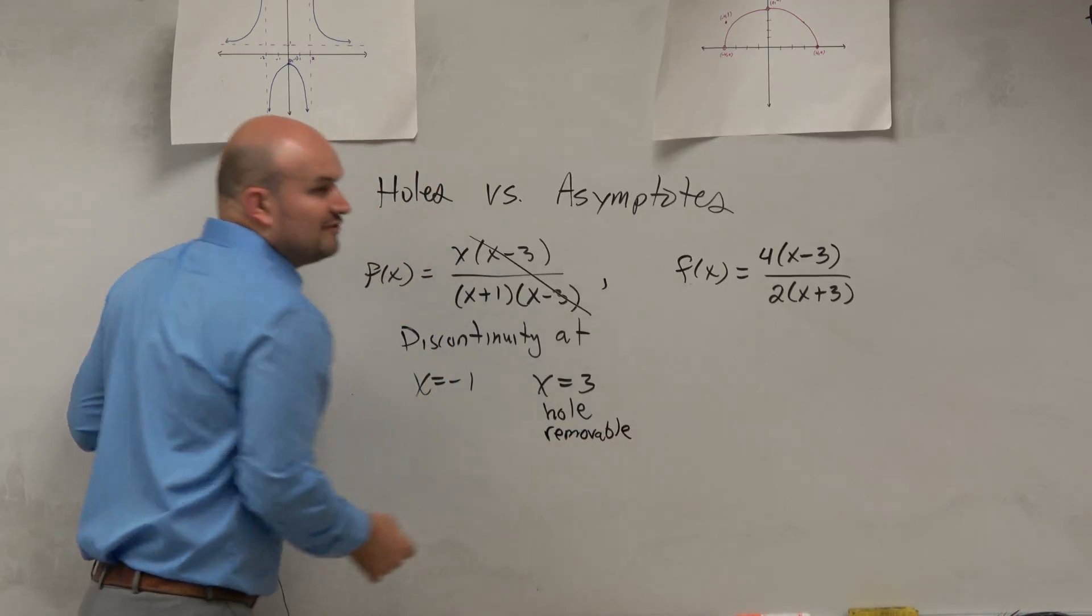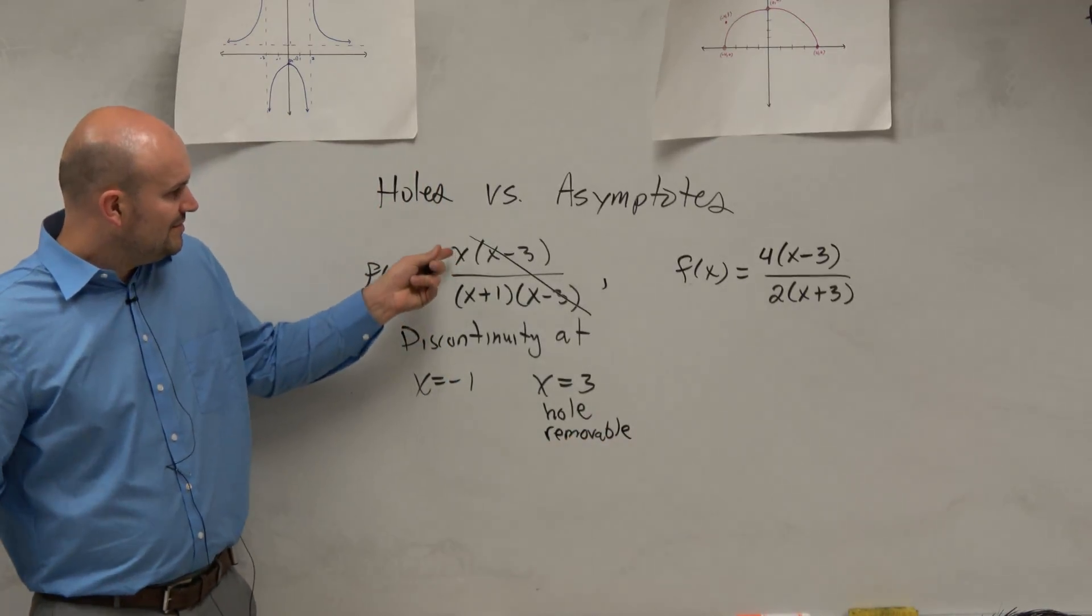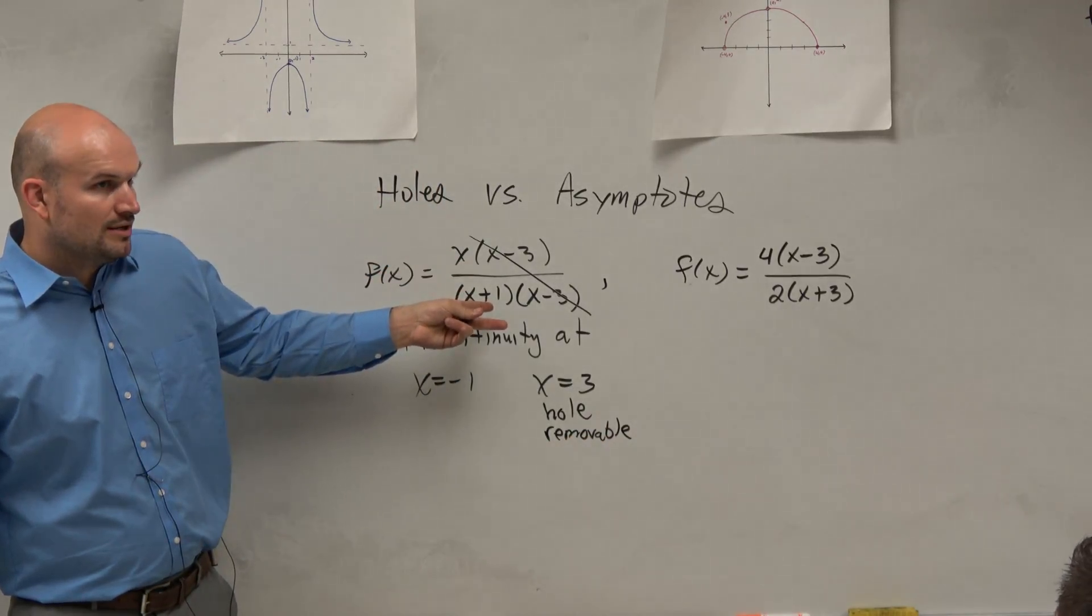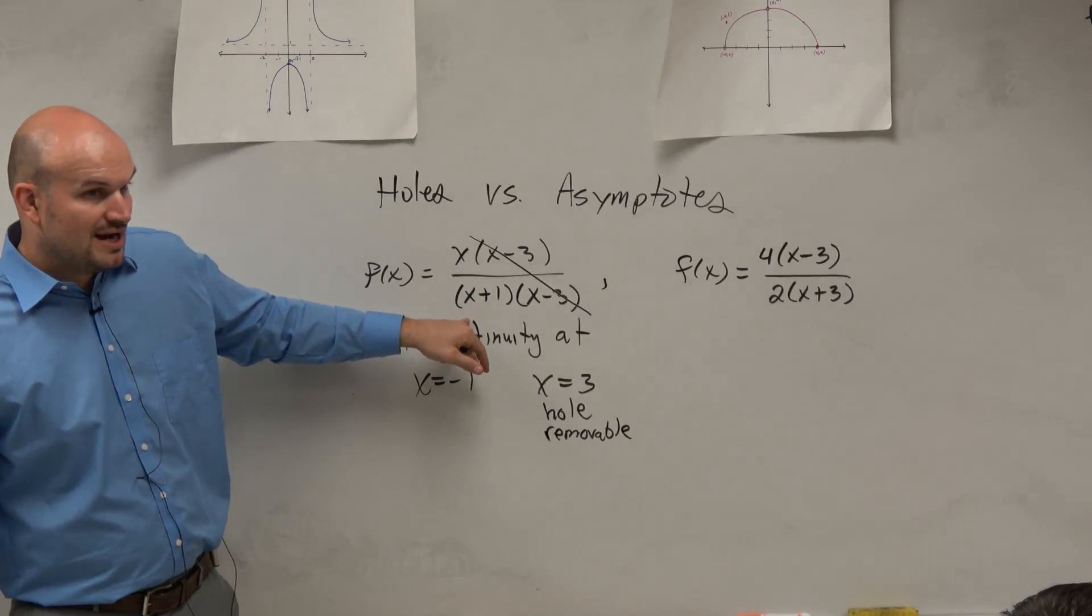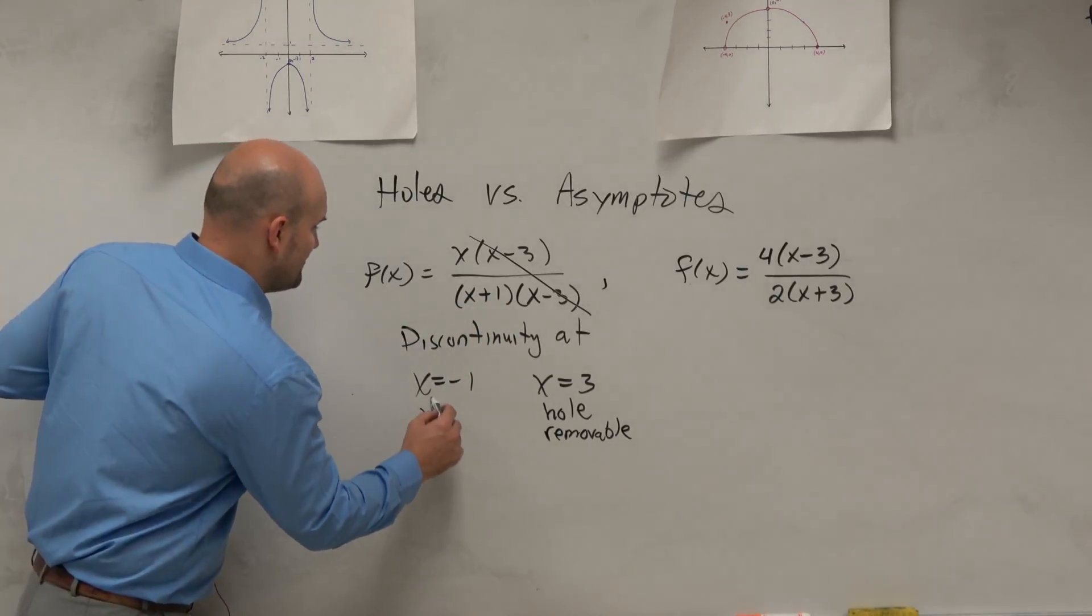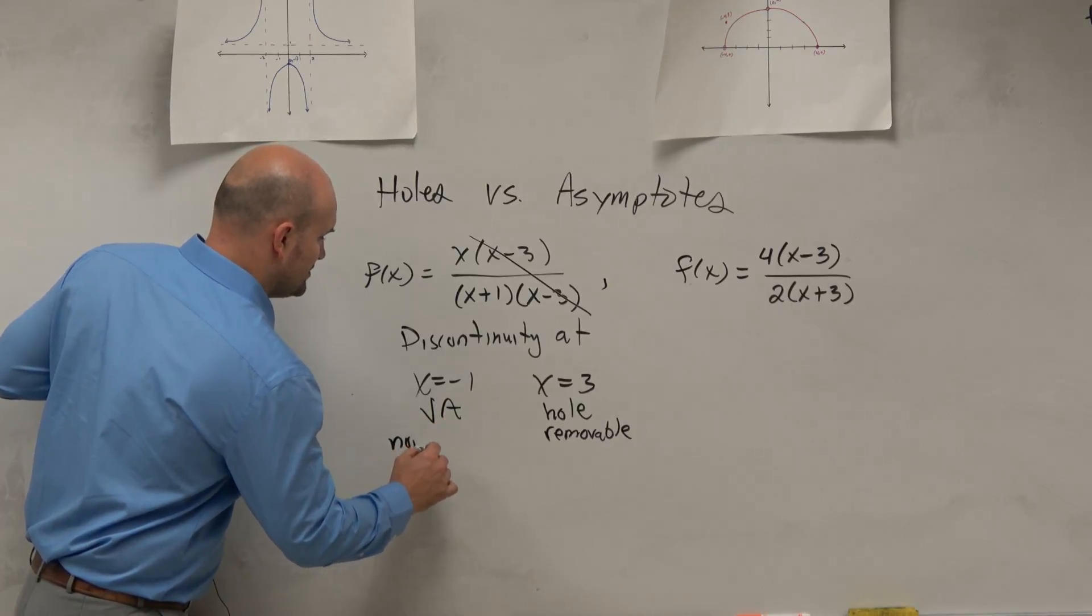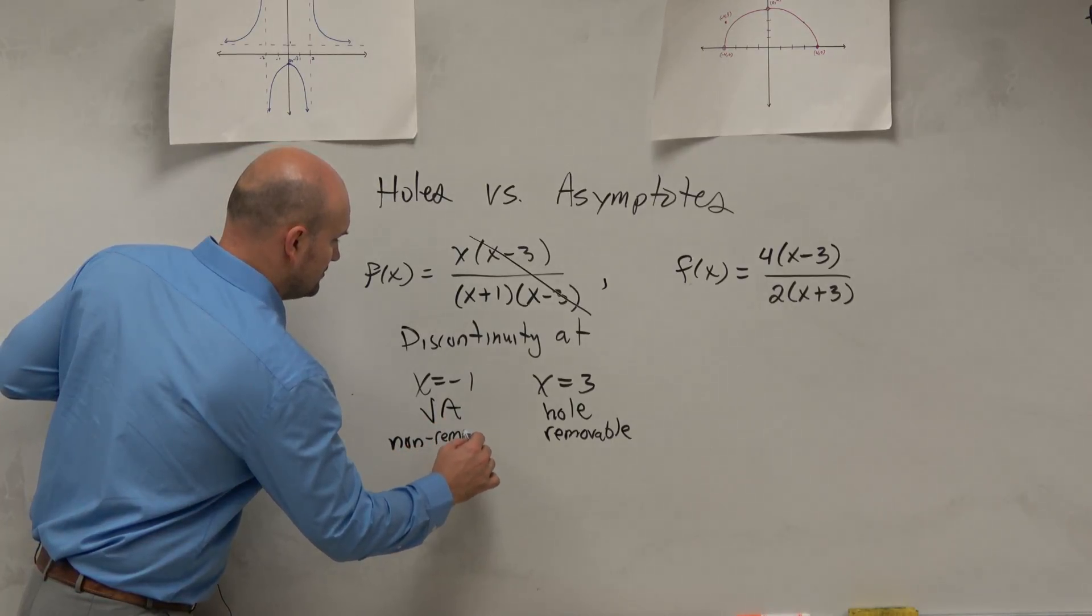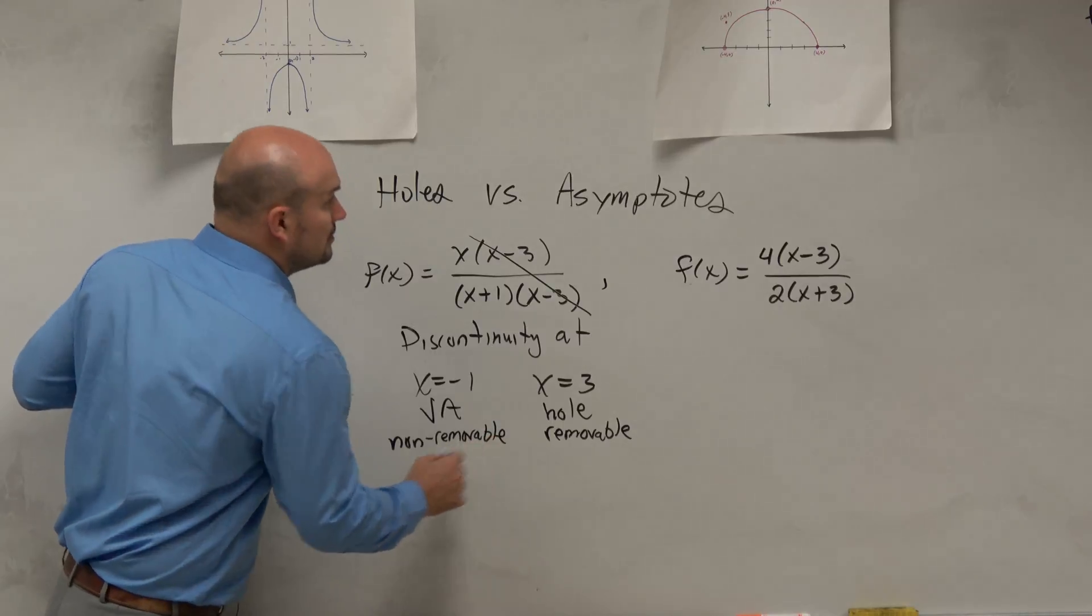On the simplified version of this graph, we still have x over x plus 1. This never got removed. It's non-removable. So that is a vertical asymptote, which is non-removable, OK?